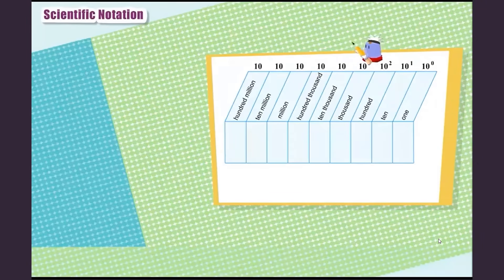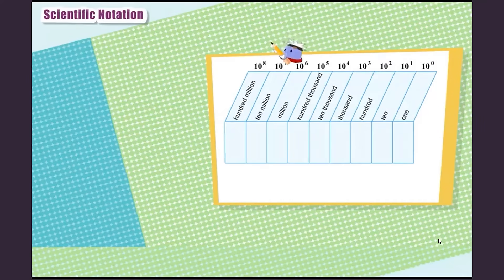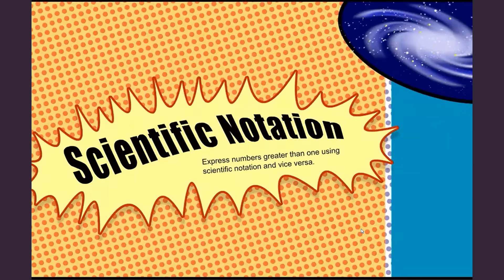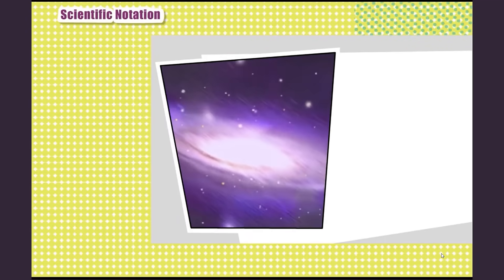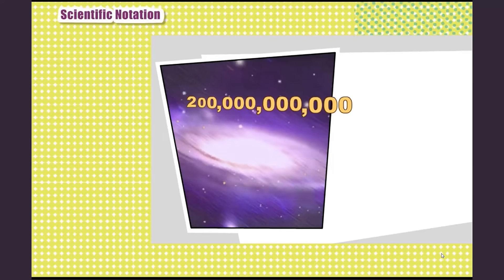Many students benefit from graphics and tables to organize math data. This lesson covers the concept of expressing numbers between zero and one in scientific notation and demonstrates how the values can be visually organized. Time for Learning lessons begin by giving students the background knowledge needed to anchor their new understandings. Notice how the instructional portion starts with an attention-grabbing connection.